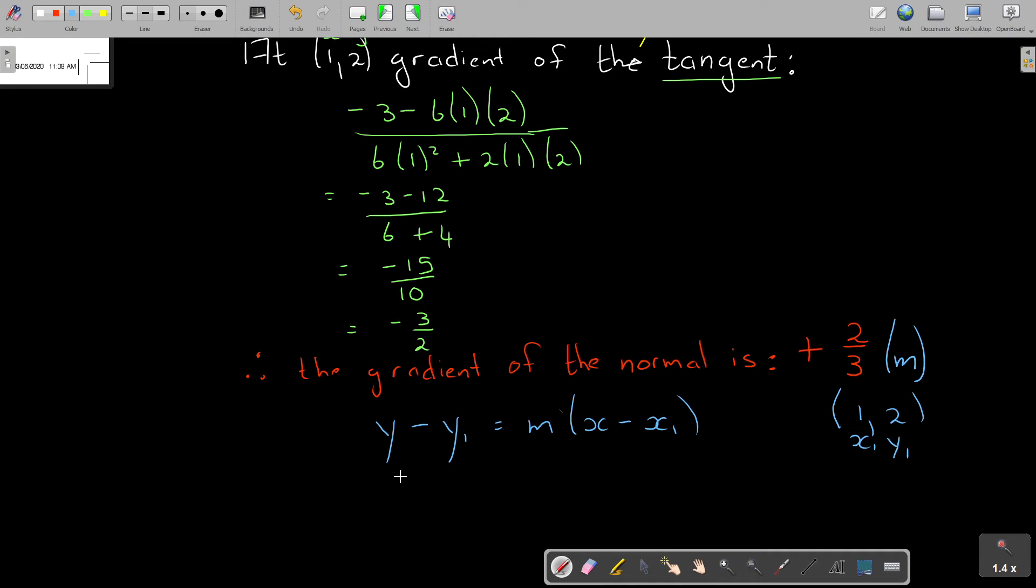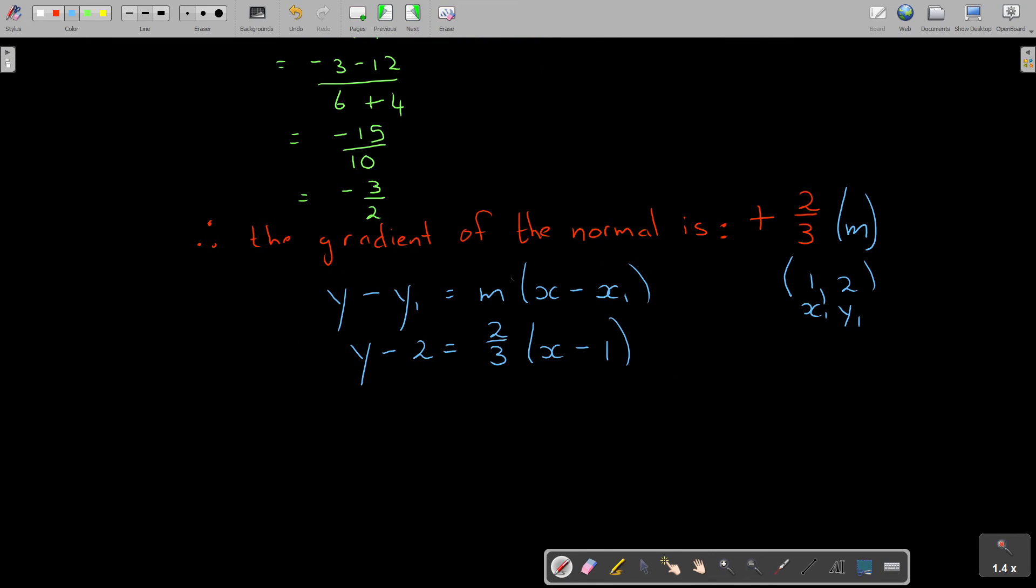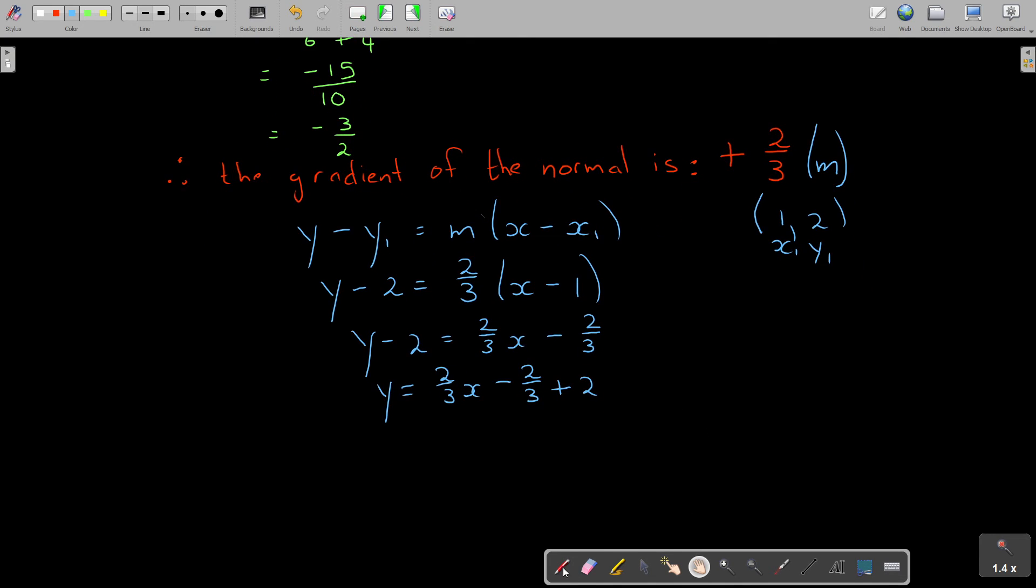So it's y minus 2 equals, and m, remember it's the normal now, so it's the reciprocal with different signs: 2 over 3 times (x minus 1). Then y minus 2 equals 2 over 3 x minus 2 over 3. Now let's simplify this.